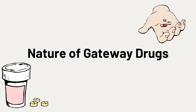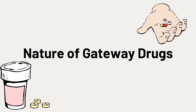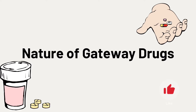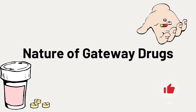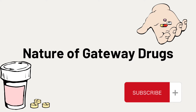Nature of gateway drugs: A drug is any substance that changes bodily functions. A gateway drug is a drug that is thought to lead to the use of more dangerous drugs. Examples of gateway drugs are caffeine, tobacco, and alcohol. These are readily available but sold only to adults.